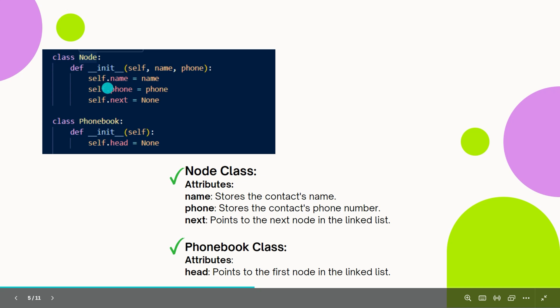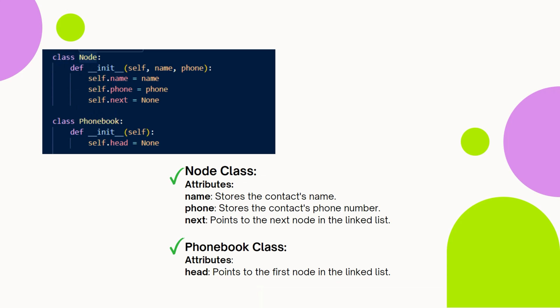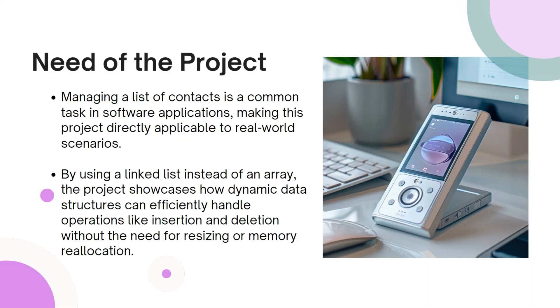This is the node class I am using. The node has a name value for the person's contact we are saving, a phone value for the phone number, and a next value where we store the reference to the next node — self.next is equal to None by default. There is also a PhoneBook data structure where we initialize with self.head equal to None. The name stores the contact name, phone stores the contact phone number, and next points to the next node in the linked list.